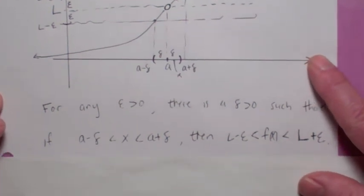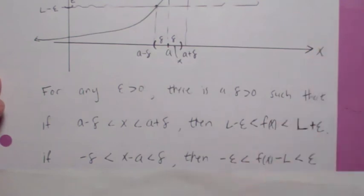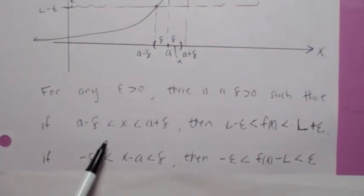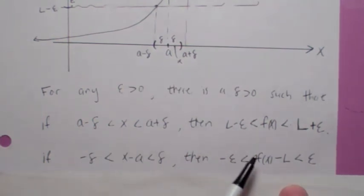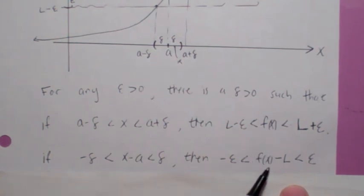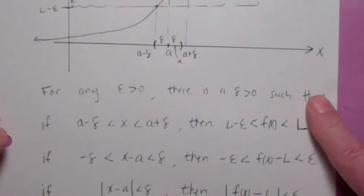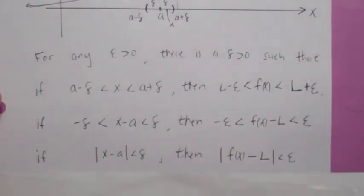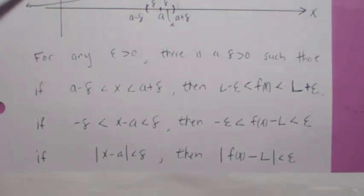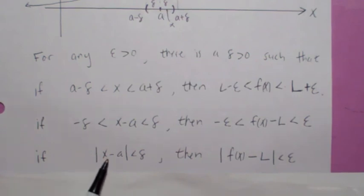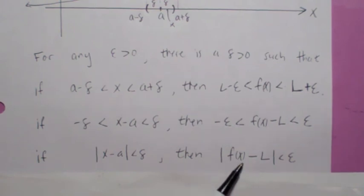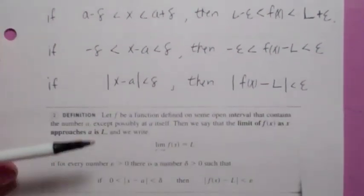The rest has to do with absolute value inequalities. We can write these each as absolute value inequalities. We have to get a negative delta on one side, positive delta on the other — let's do that by subtracting a from all three sides. To write the other as an absolute value inequality, we subtract L from all three things. So each of these can be written as an absolute value inequality. No matter how close — for any epsilon around L — you can find a delta around a, so that if x is within a minus delta and a plus delta, then f of x is within L minus epsilon and L plus epsilon. And that's exactly the formal definition of limit.